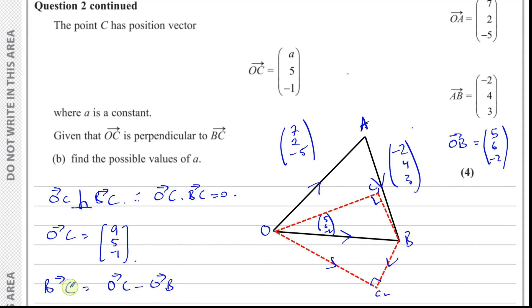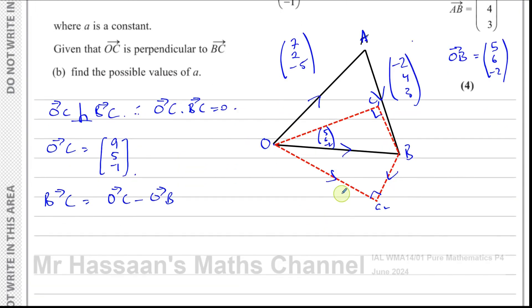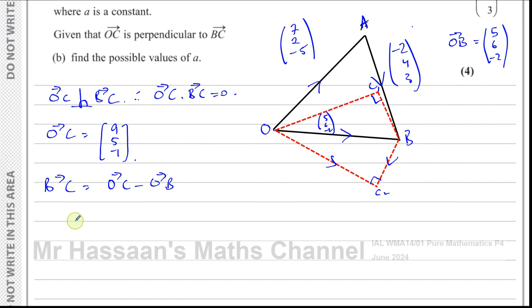If I want to go from B to C, I've got to go from B to O and then from O to C. So it's like saying OC minus OB. That's how it works. Now OC we know already is a, 5, negative 1, and OB is 5, 6, minus 2. So that's going to give you a minus 5, negative 1, and minus 1 plus 2 which is 1. So that's the vector from B to C.